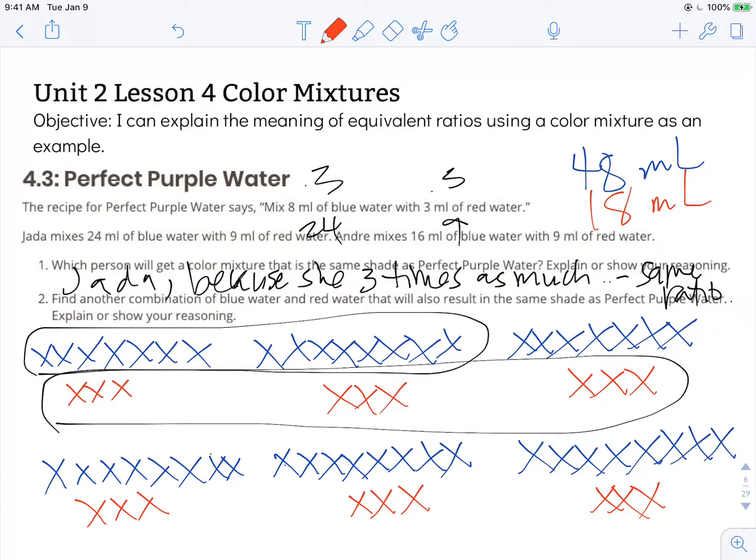That would be the same shade, but it would be twice as much as what Jada made and six times as much as the original recipe. So this would be like making six batches of the original recipe.